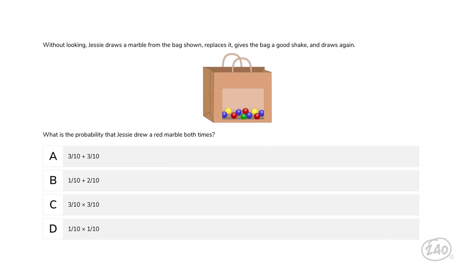Without looking, Jessie draws a marble from the bag shown, replaces it, gives the bag a good shake, and draws again. What is the probability that Jessie drew a red marble both times?